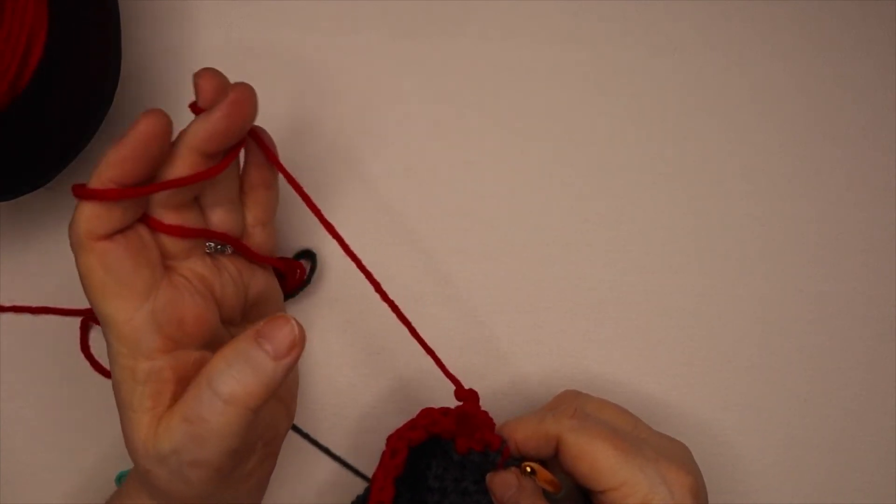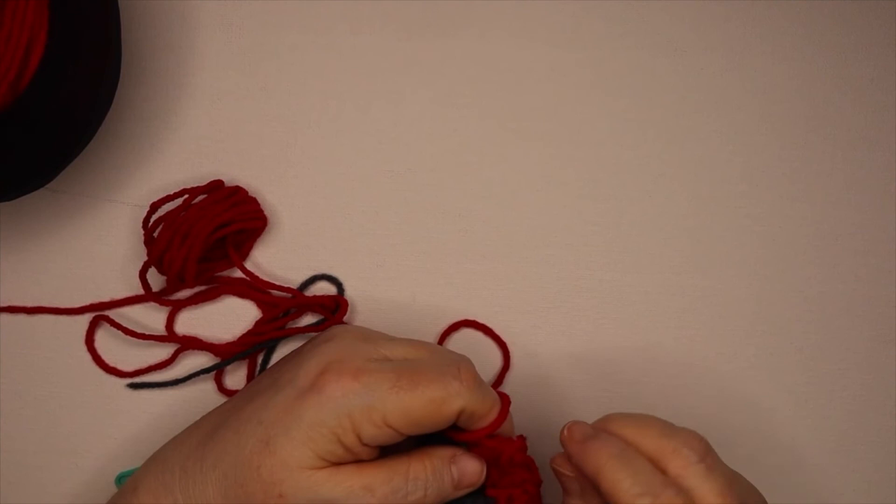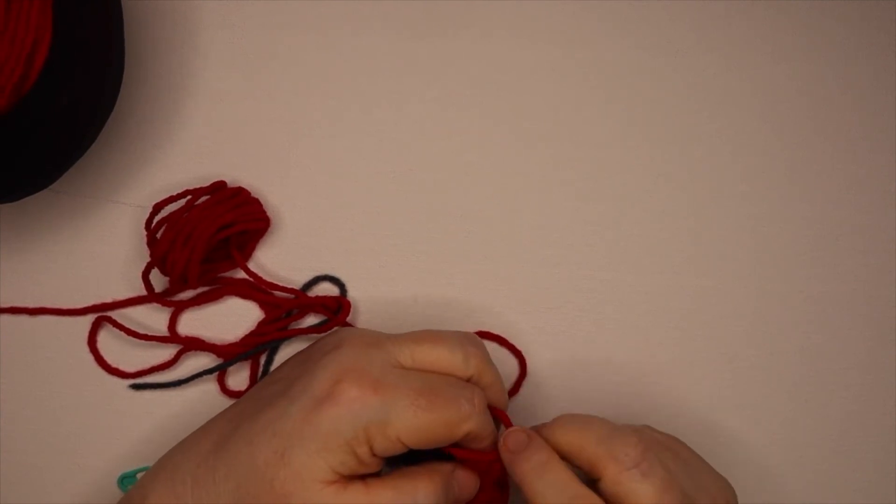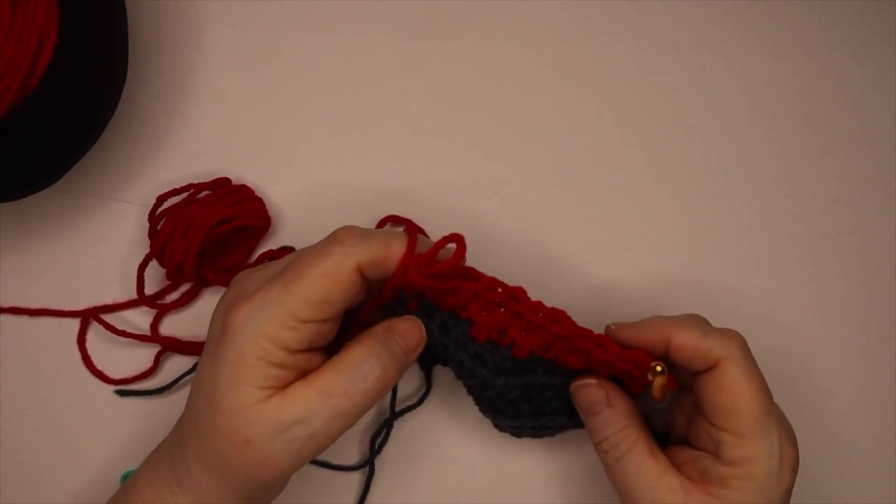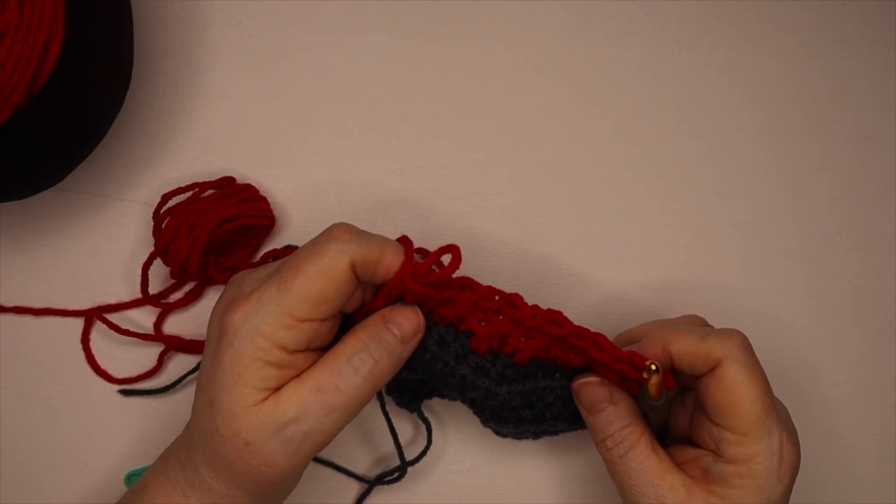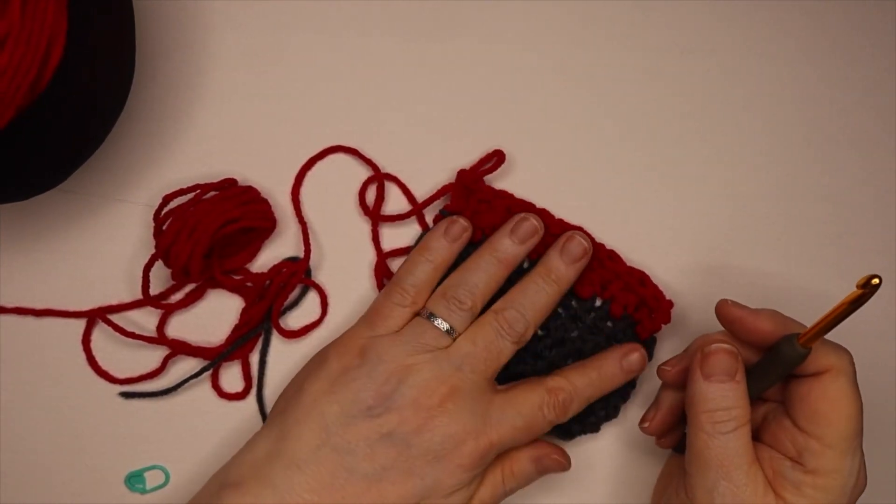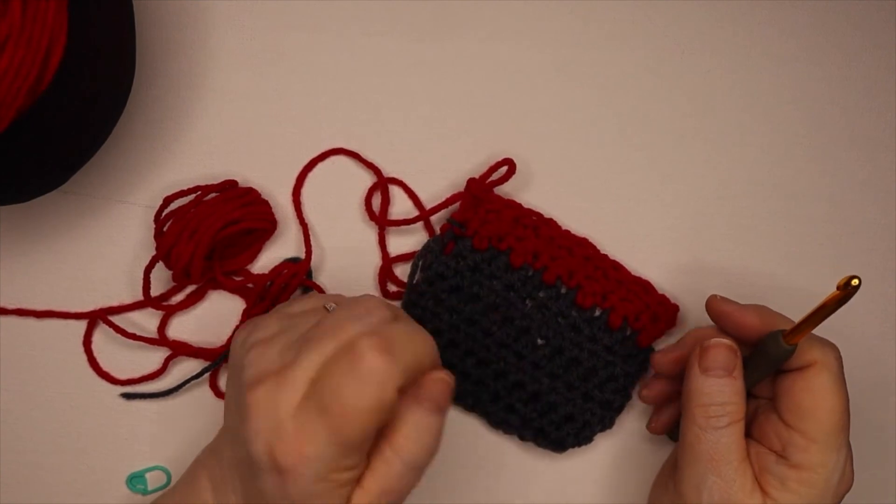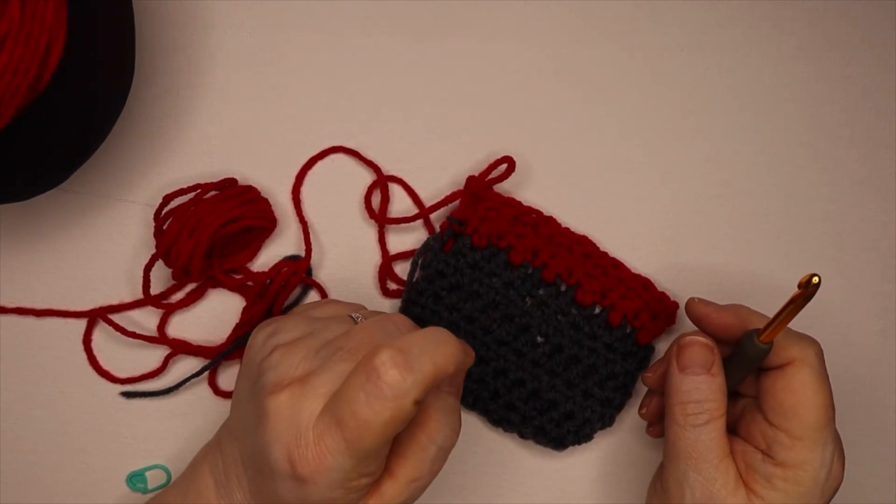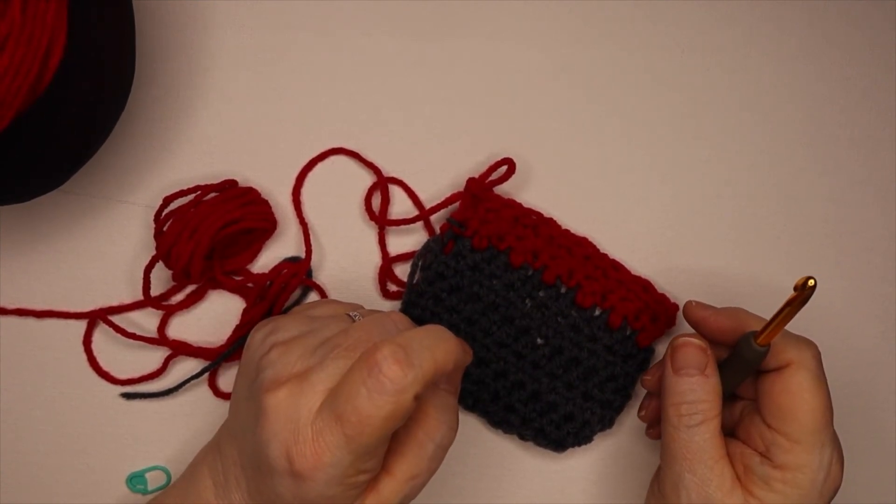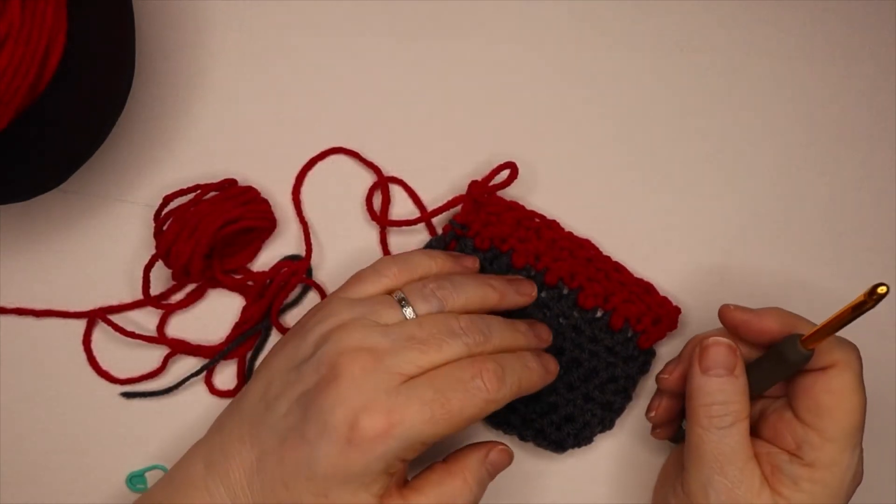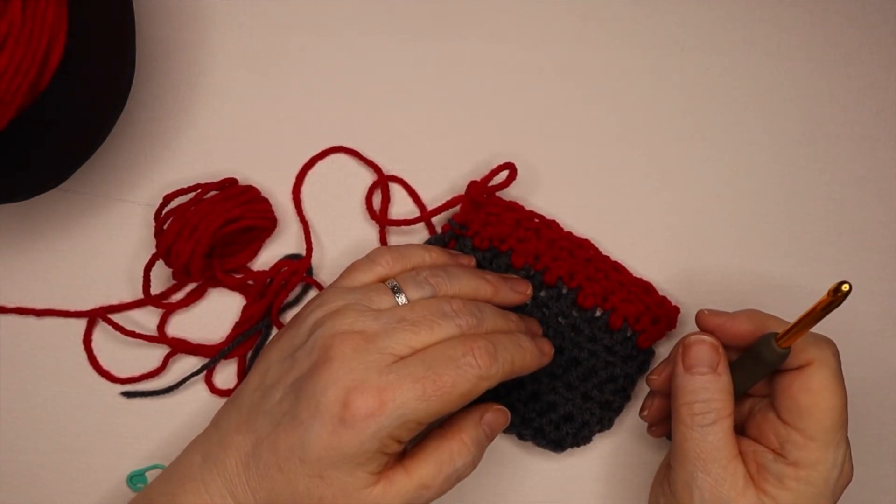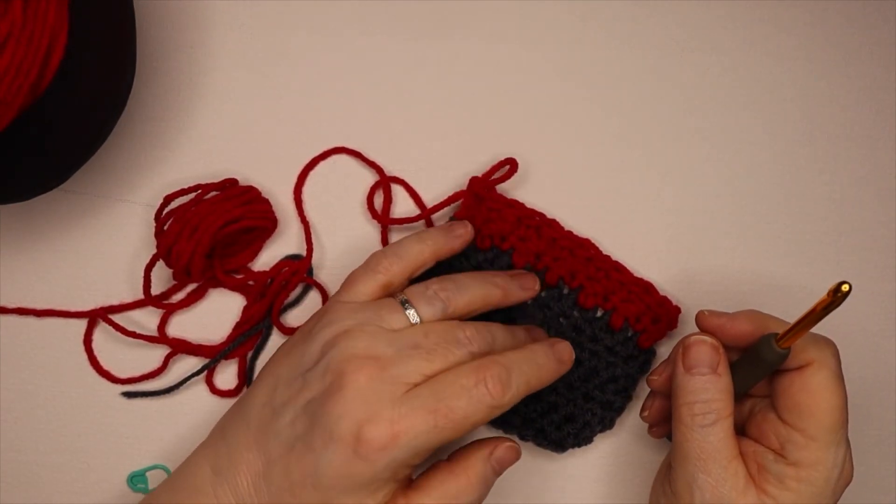That is the seed stitch. For every stitch that has a double crochet, you'll put a single crochet. For every single stitch, you'll put a double crochet in it. And you'll just repeat those rows for as many times as you want. I am probably going to do five or six rows. And then the following day, tomorrow, I'll have another stitch that I'll be adding on.